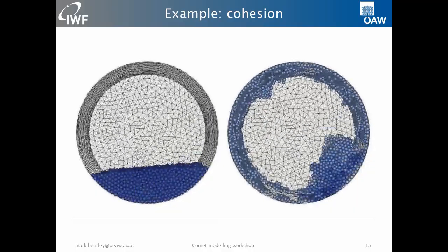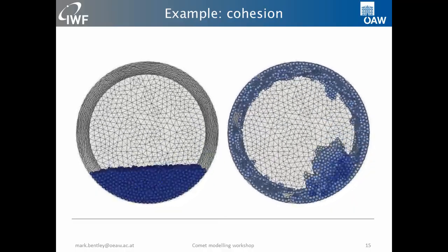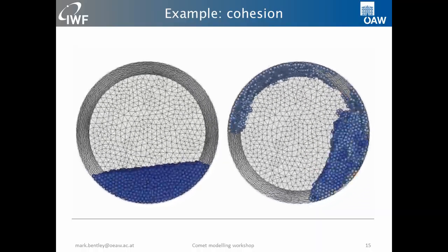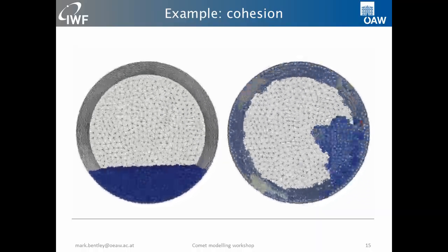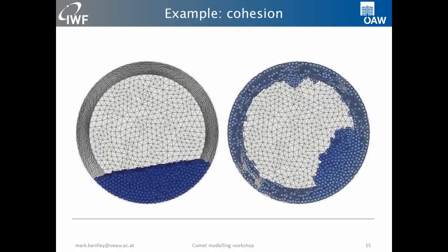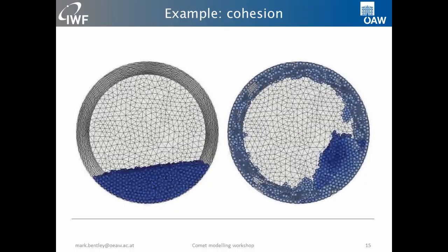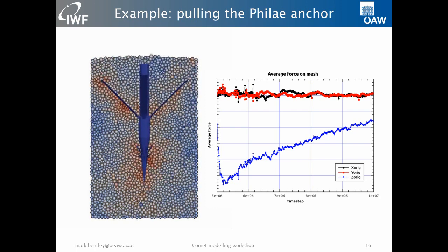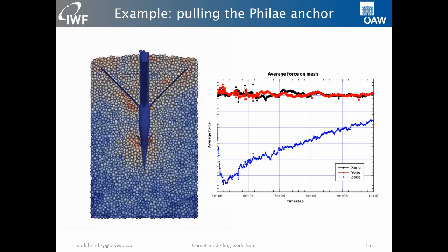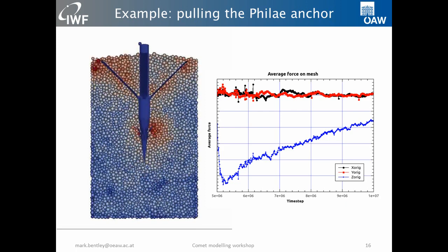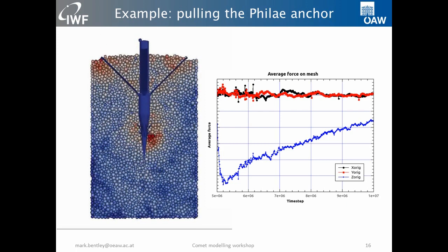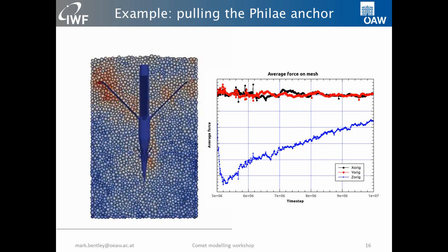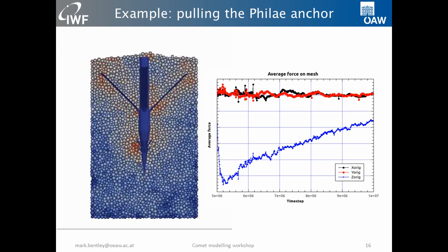The cohesion in this case is far higher than you would expect in reality, and the particle-wall cohesion is very high, so it's not a representative case. Another thing you can do is work with mesh imports. One of the nice things about this tool is that you can import quite complex CAD meshes — here I imported the Philae lander anchor mesh — and then you can pull this out of a granular material with a given porosity and cohesion, and derive the force required or the force on the mesh.